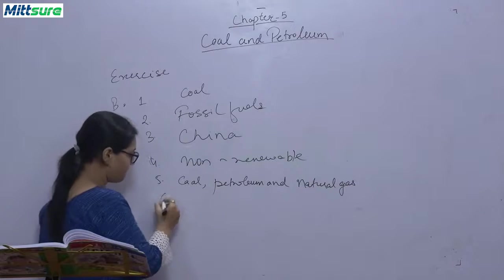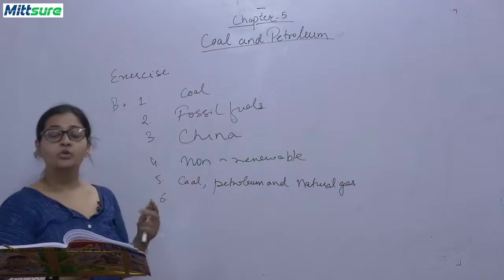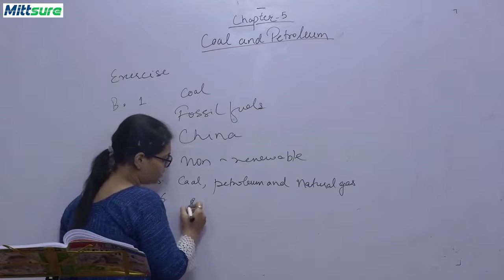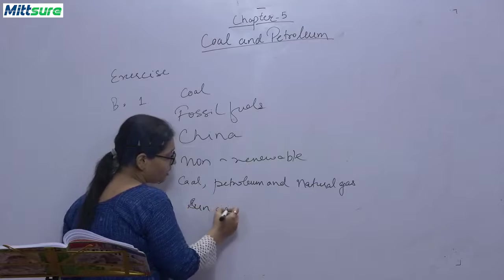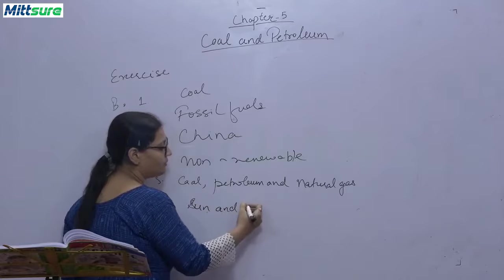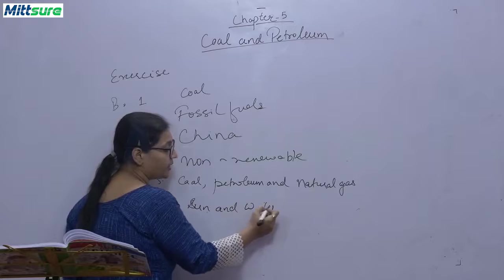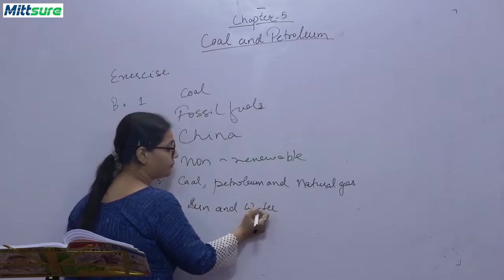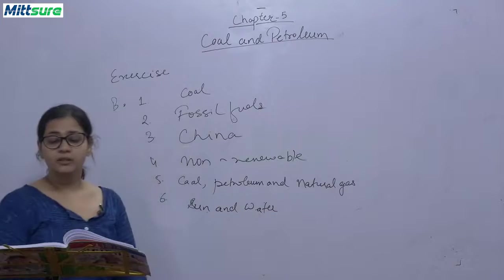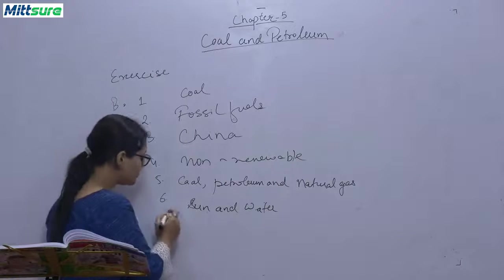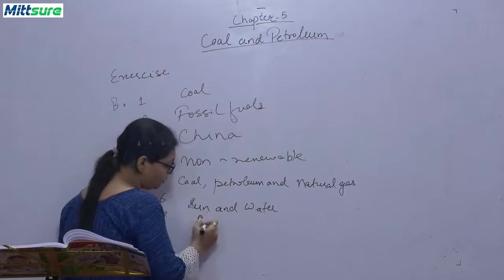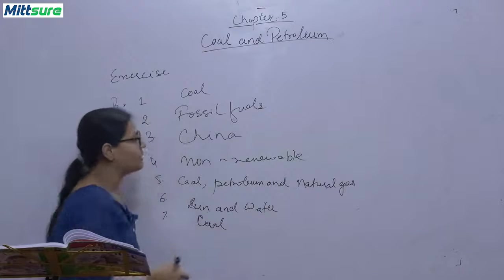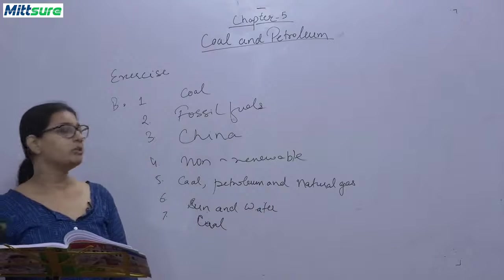Sixth, two examples of renewable source of energy are, you can write any. I am writing only two: sun and water or wind. Wind can also be an example. Seventh, 50% of electricity generated in USA is by coal. So please note down these answers for this question.